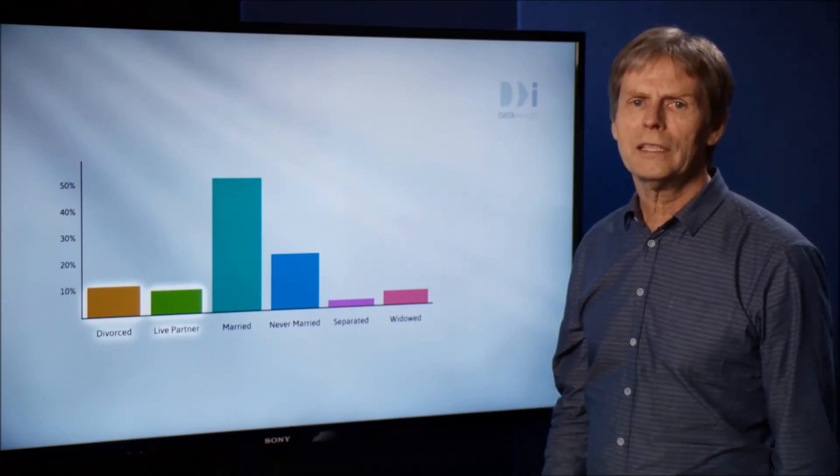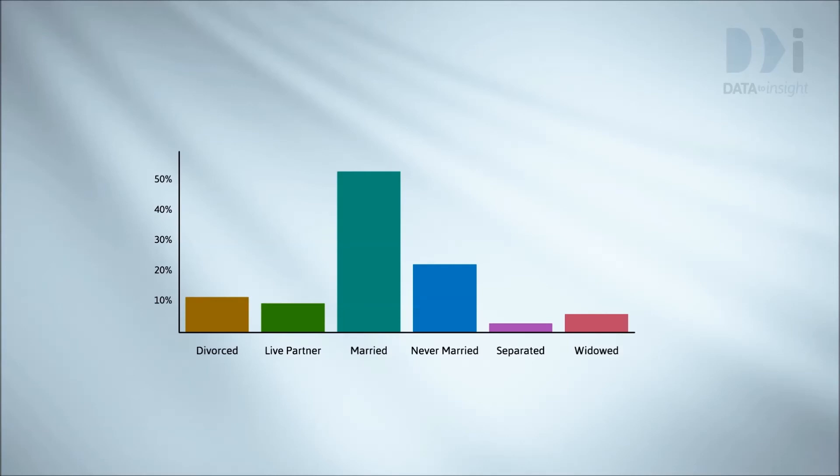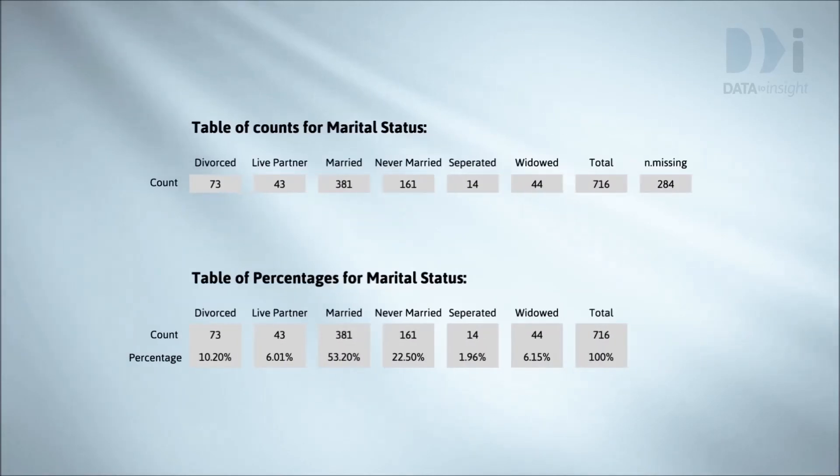We can also use the scale to link these things with numbers. So married looks like about 55%, never married about 20%, divorced about 10%, and so on. We get useful impressions of what the data are saying much more quickly from the graph than from a table of numbers.